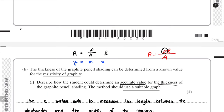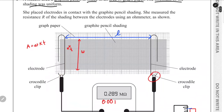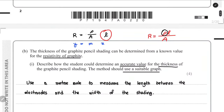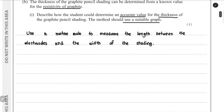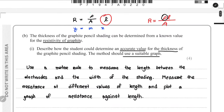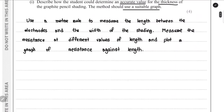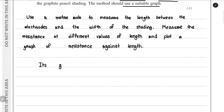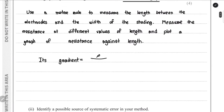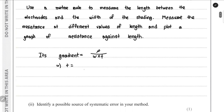We can vary the length by moving the electrodes apart. Measuring resistance R at different values of length L, we plot a graph of R against L. This will be a straight line through the origin with gradient equal to ρ/(W×T). Since ρ is known and W can be measured, we can find the thickness T = ρ / (W × gradient).